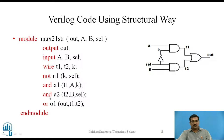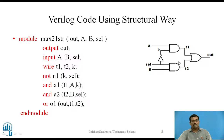In the next statement we write and a2 — a2 is the instance name — with ports T2, B, SEL. T2 is the output and B and SELECT are the inputs, as seen in the circuit diagram. Finally we describe the OR gate: or o1 with ports OUT, T1, T2 — OUT is the output and T1 and T2 are the two inputs to the OR gate. We close the module definition with the endmodule keyword.